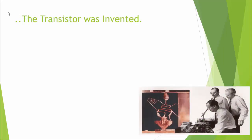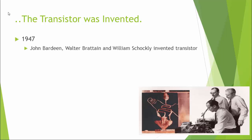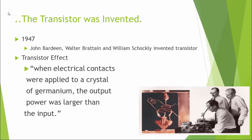So in 1947, the transistor was invented. John Bardeen, Walter Brattain, and William Shockley observed what they called the transistor effect. When electrical contacts were applied to a crystal of germanium, the output power was larger than the input. This might seem like a strange statement, but what it meant was that this item could work as a solid-state switch and a solid-state amplifier. We'll talk much more when we unpack the transistor later in this course.